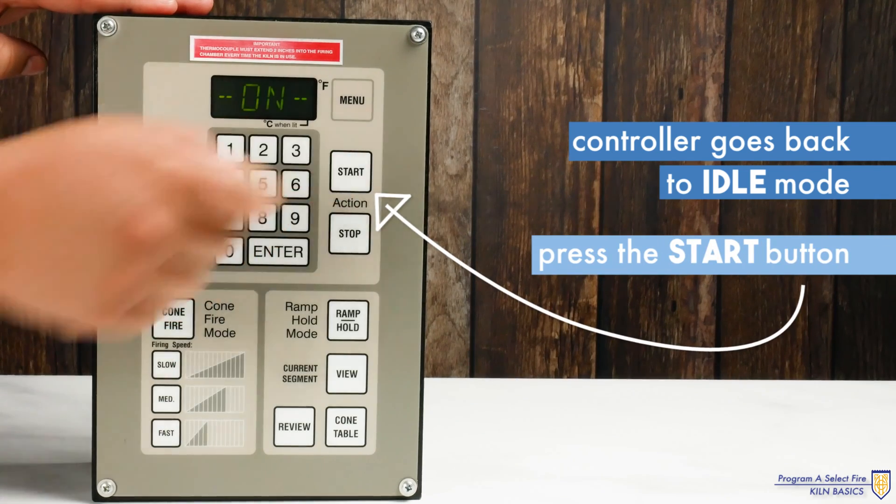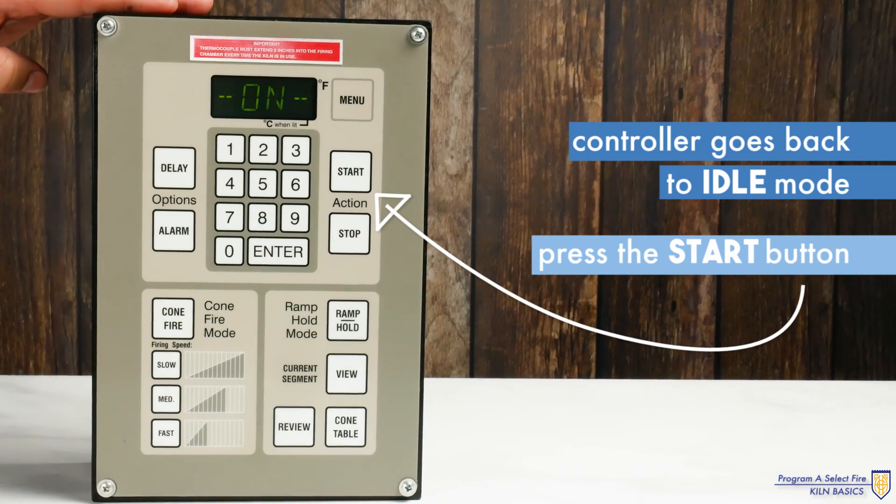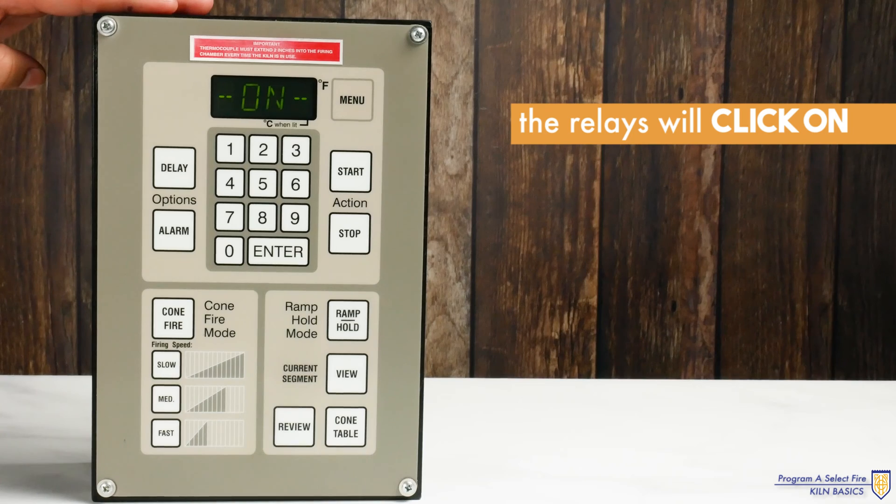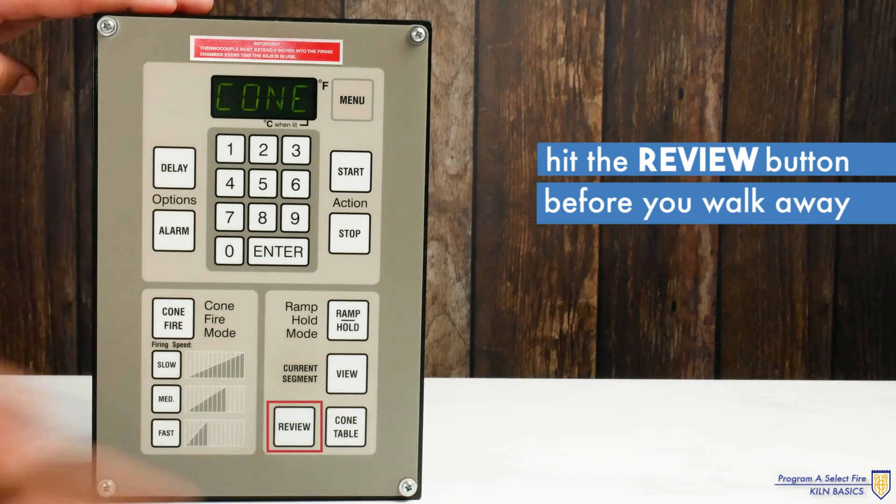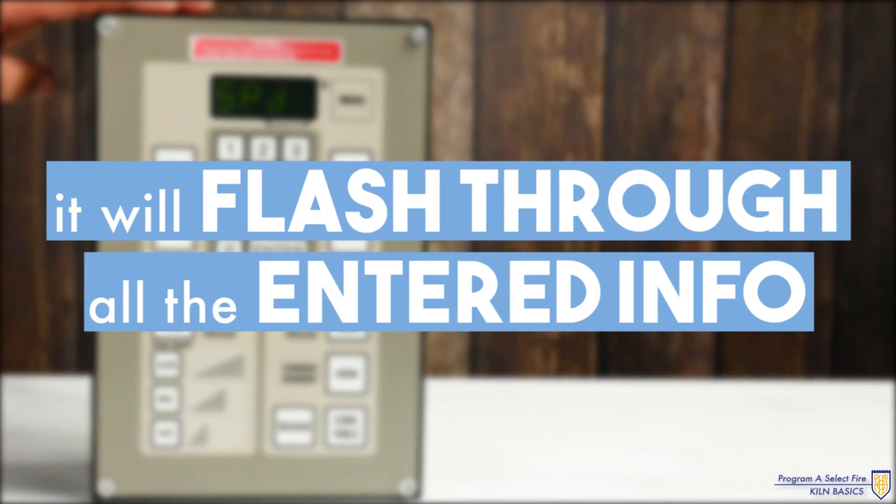Press the start button and wait to see the display read on. You will hear the clicking of the relays which is a normal function of the kiln. Always hit the review button before you walk away to ensure everything is programmed correctly. It will flash through all the information you just entered.